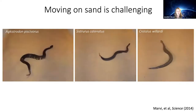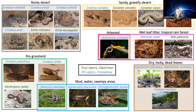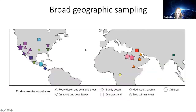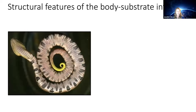We took a broad sampling of vipers from a variety of different environments and geographic regions — not only different habitats but from all over the world. We looked at the small-scale features on the only interface that touches the environment for them: the ventral scales, or belly scales, of these individuals.